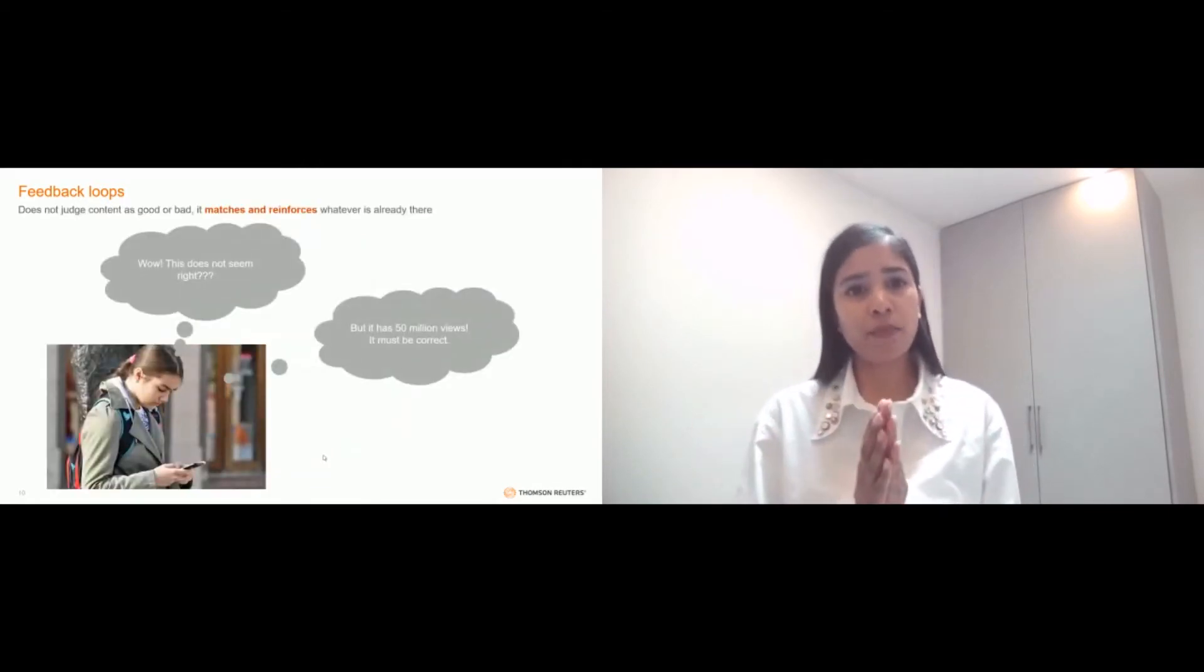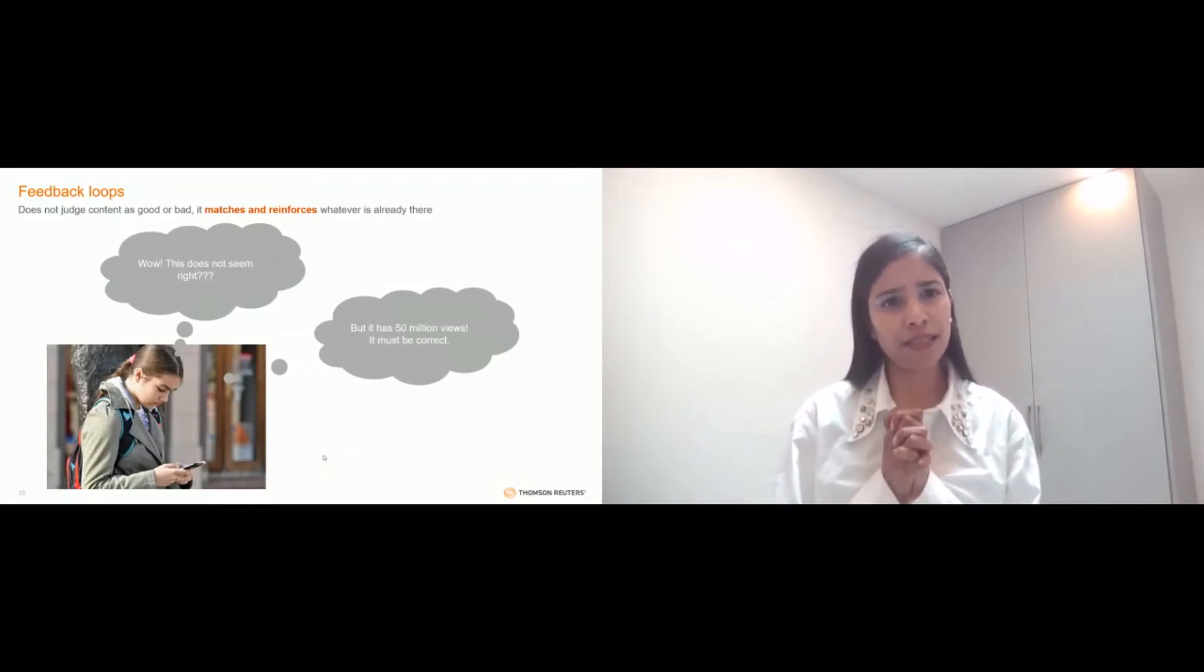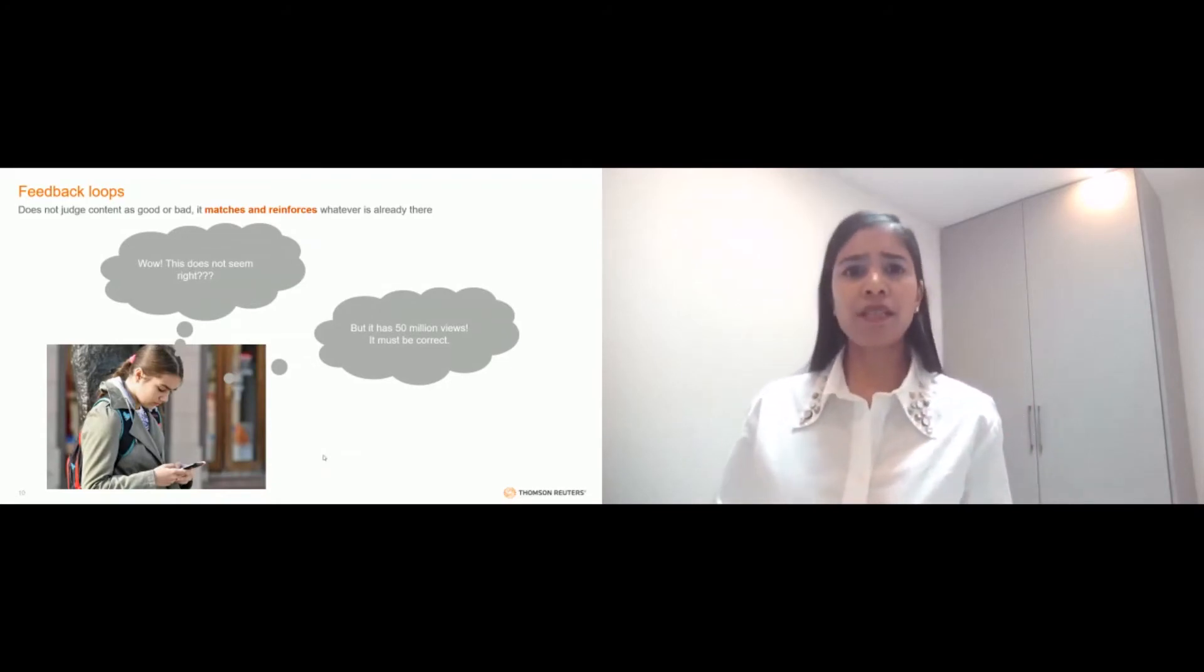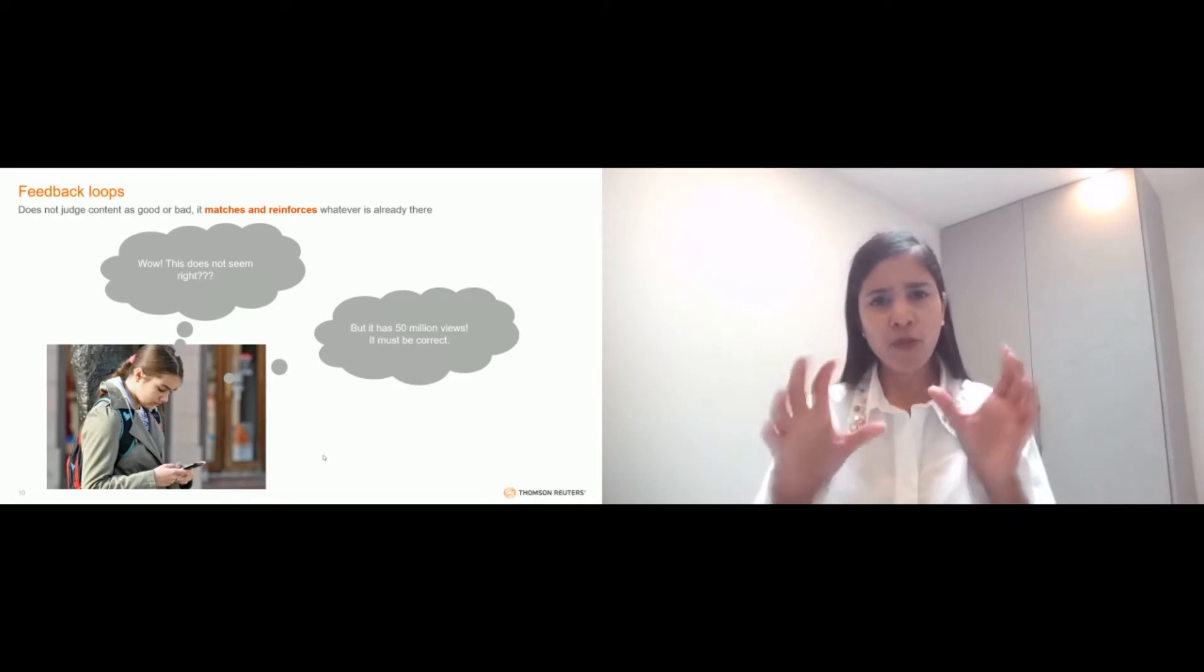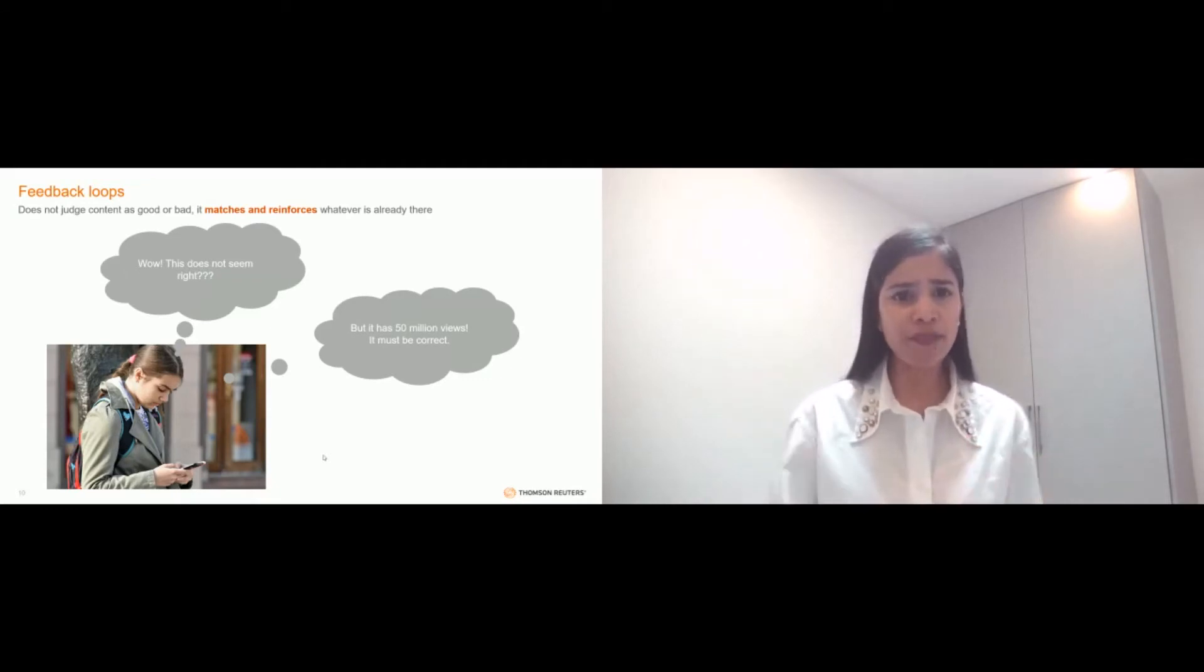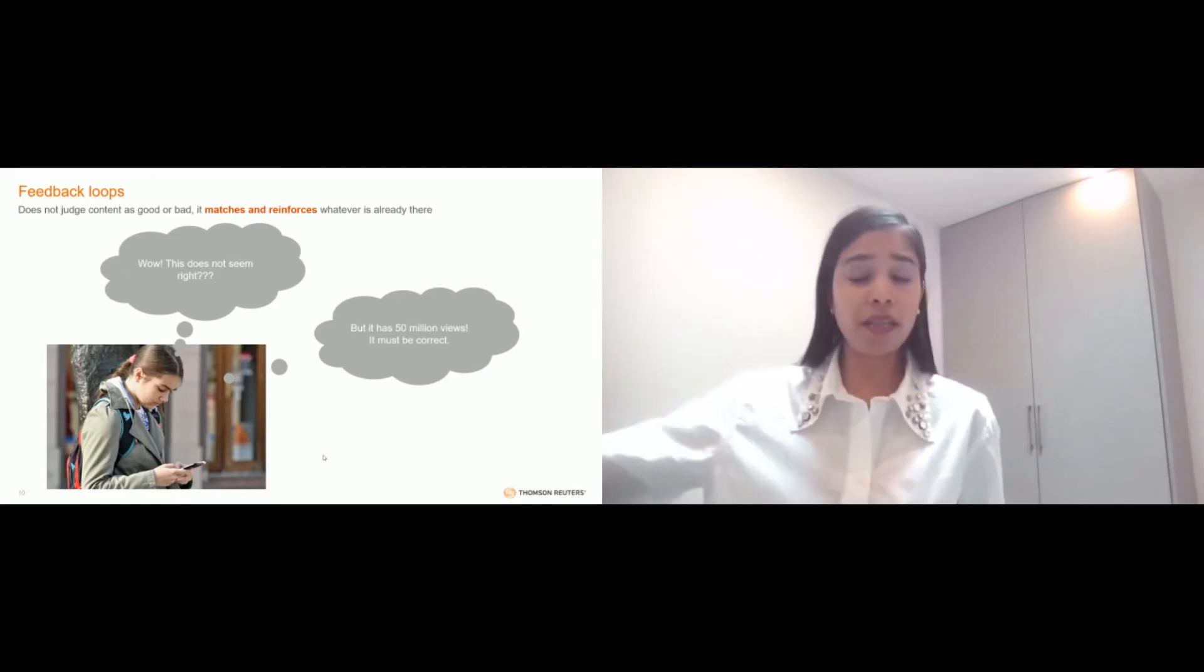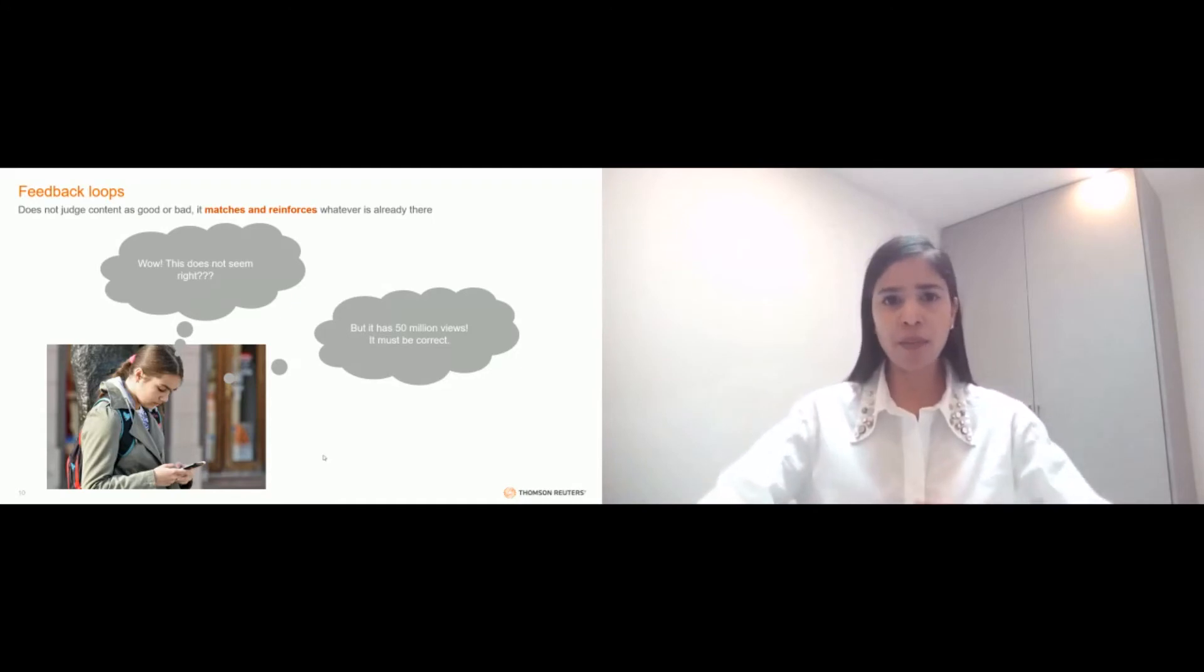In the age before AI's powerful feedback engines, which do exactly what they're intended to do, they match and reinforce whatever is already there. They don't judge the content as good or bad. Before this age, a would-be conspiracy theorist would have to go out into the world and curate their own content. And in doing so, they would come across a wide variety of views. And maybe, just maybe, they could have been diverted off their intended path. But in the face of 50 million views, affording these videos crowdsourced credibility, even the mildly curious can turn into an extremist.